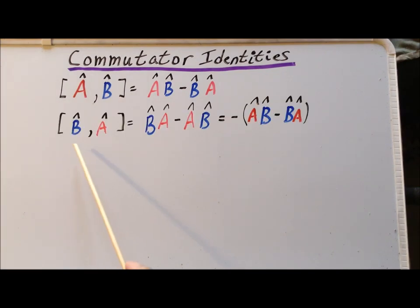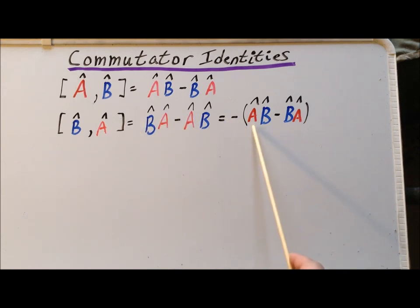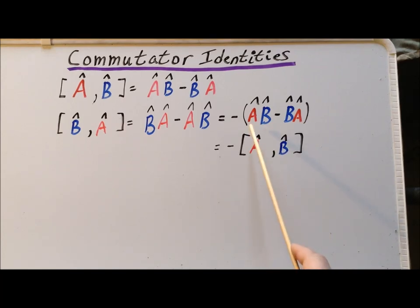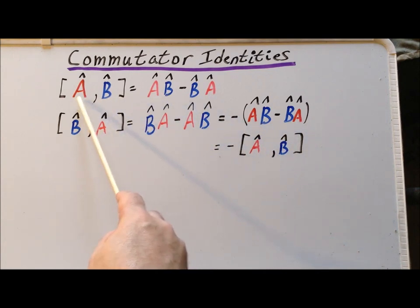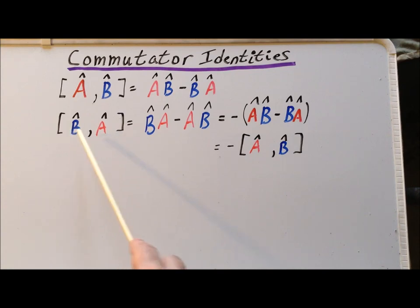Using the definition, if we look at the commutator of B and A, we have B times A minus A times B, and we can use the properties of subtraction to write it as minus (AB minus BA). We recognize AB minus BA as the commutator of A and B, so the commutator of B and A is minus the commutator of A and B. If we switch the position of the two operators, we flip the sign of the commutator.